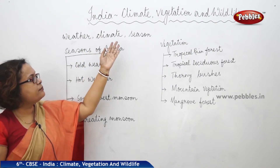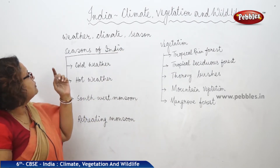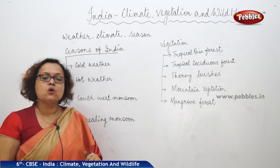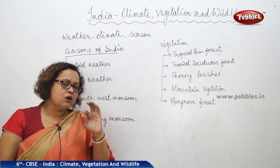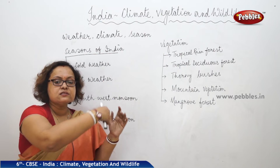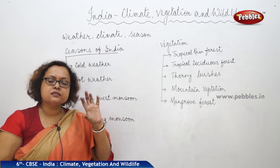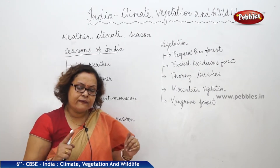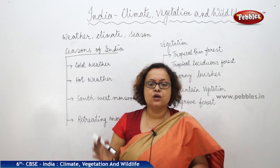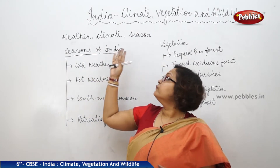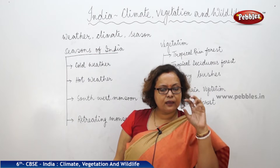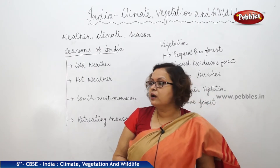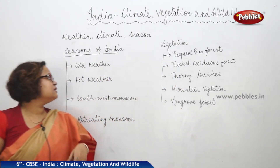Today we are discussing India's climate, vegetation, and wildlife. Before we start, we need to know the difference between weather, climate, and season. Weather is the current condition outside — is it raining, sunny, or stormy? That is weather at a particular time. Climate is the weather of a place over a certain period, maybe 25 to 30 years. Season is a particular type experienced at a time of year. Indian seasons are divided into four major types.